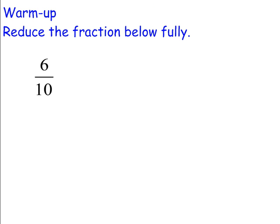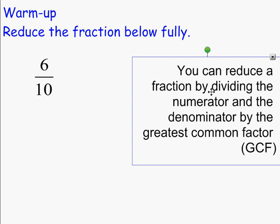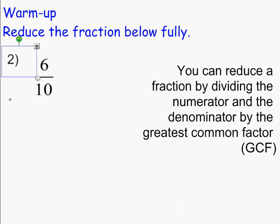As a warm-up, I want you to reduce the fraction below fully. So we got 6 over 10, or 6 tenths. Essentially, you can reduce the fraction by dividing the numerator and the denominator by the greatest common factor. What's the greatest common factor of 6 and 10? Well, that's 2. 2 goes into 6 three times, and 2 goes into 10 five times. So the fraction reduces to 3 fifths.